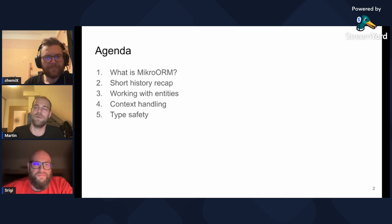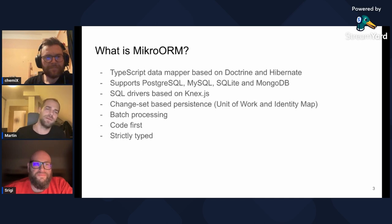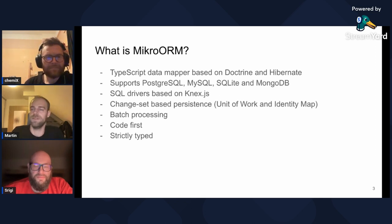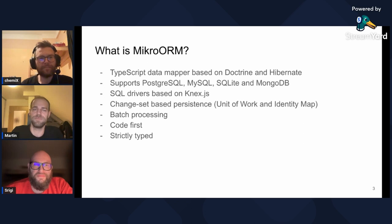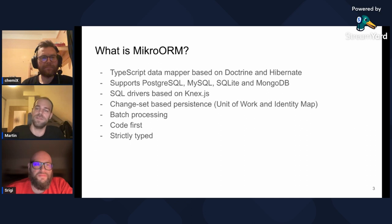Let's start with what MicroORM actually is and how we got here. MicroORM is a data mapper based on existing tools like Doctrine in PHP or Hibernate in Java. It uses so-called changeset-based persistence through the unit of work pattern, which unlocks optimizations like query batching. It supports several SQL dialects like Postgres or SQLite, as well as MongoDB. It's a code-first framework, so you design your entities in code and they serve as the single source of truth. It is strictly typed as much as possible.